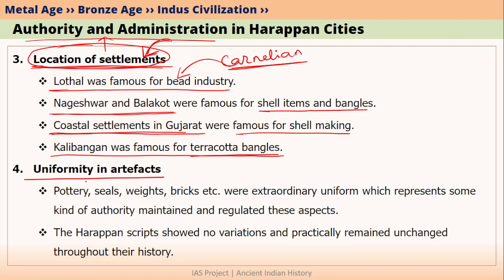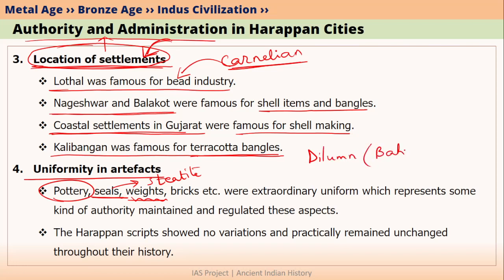Another element is the high standardization and unity in artifacts. All Harappan cities made the same two kinds of pottery: plain pottery and red-and-black painted pottery. They also had similar seals, mainly made from steatite. Moreover, the weight system was also uniform in all Harappan cities. We have also learned that the Harappan weight system was being used in Dilmun — present-day Bahrain island. Brick sizes were also very uniform in all Harappan cities. All these show there was some kind of authority which maintained and regulated these aspects.